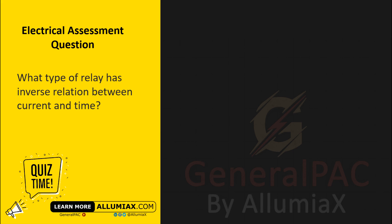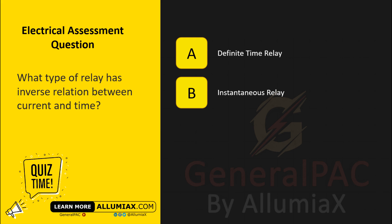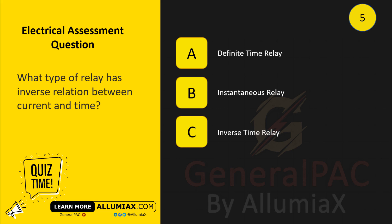What type of relay has an inverse relation between current and time? A. Definite time relay. B. Instantaneous relay. C. Inverse time relay.